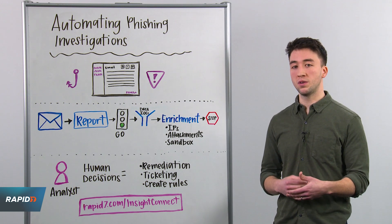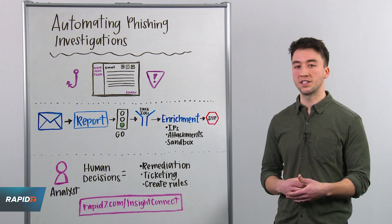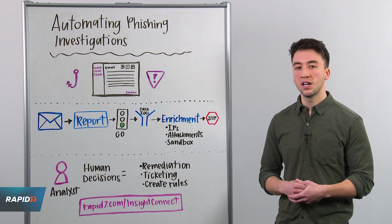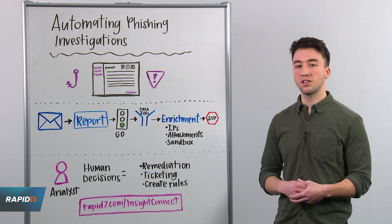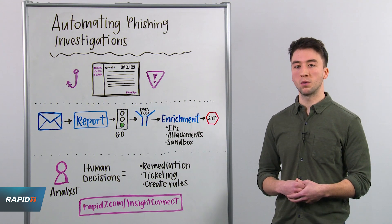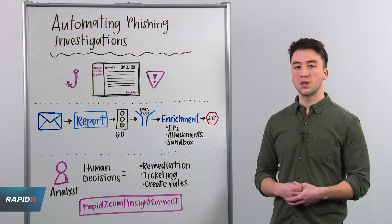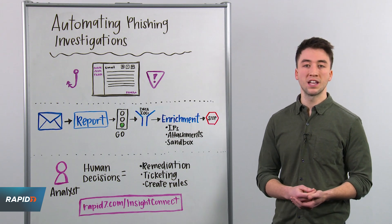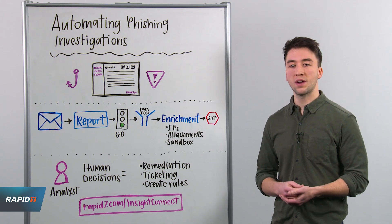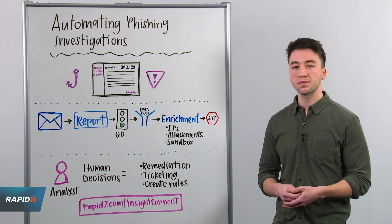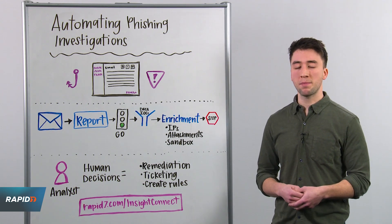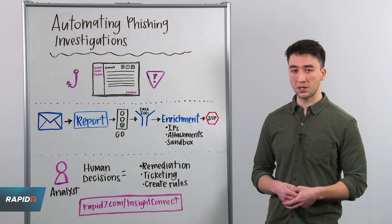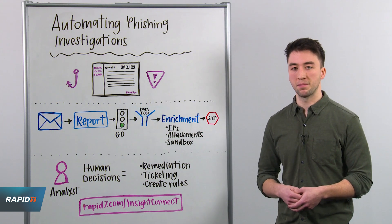The specifics are up to you and your organization's needs, but this is one way everyone can take advantage of automation today. With InsightConnect, we also provide pre-configured workflows so that you can jump right into the process, like automating phishing investigations, even if you don't have a defined playbook right now. To learn more, visit us at rapid7.com/InsightConnect. That's it for this week's Whiteboard Wednesday, and we'll talk to you next time.